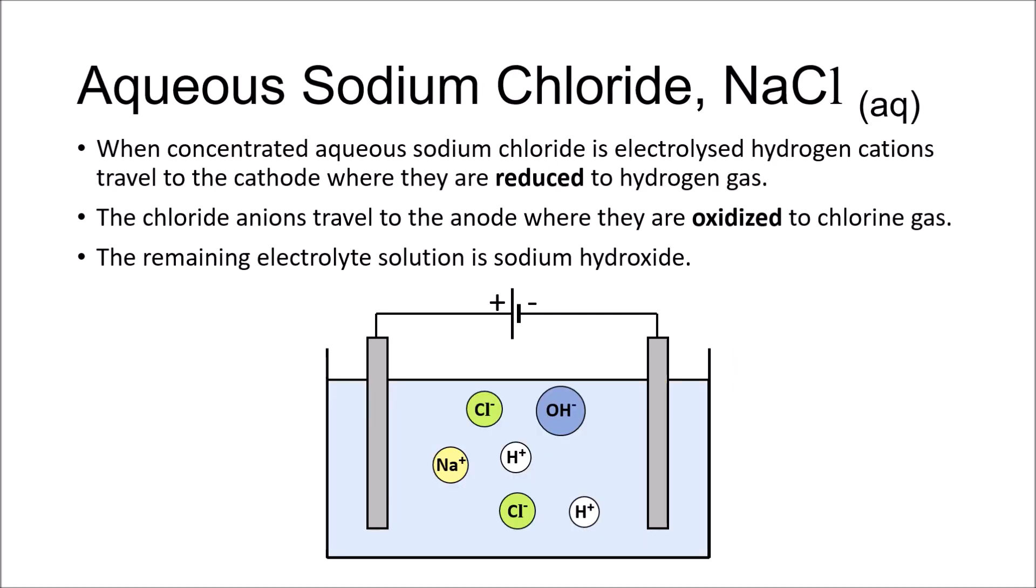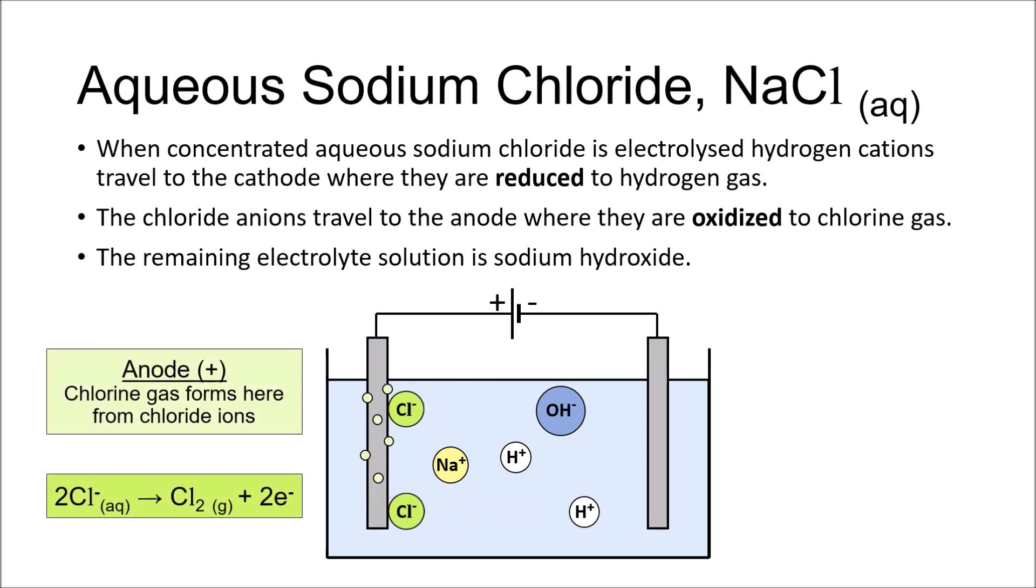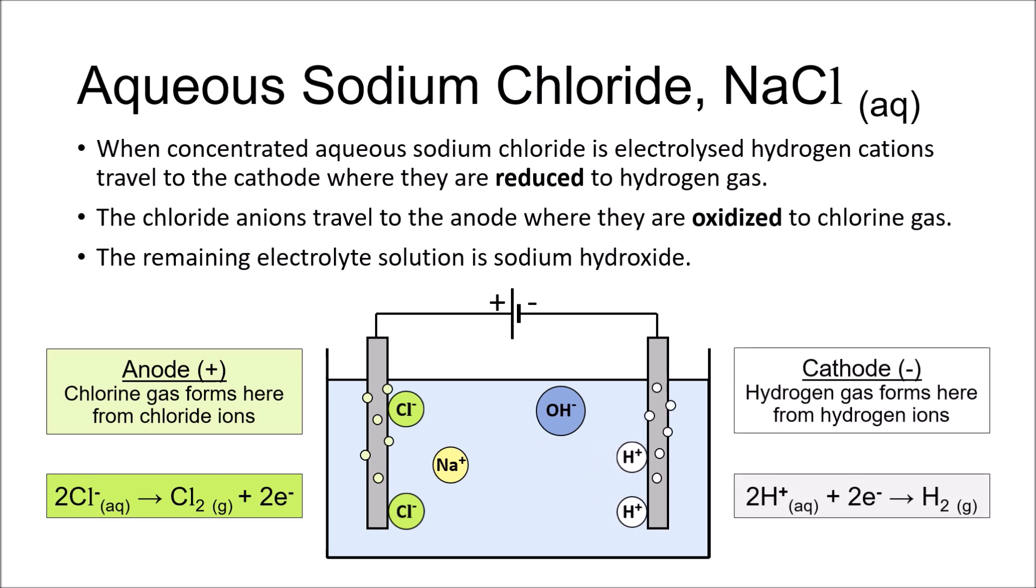A much better way to mass-produce chlorine is by electrolysis of concentrated sodium chloride solution, also known as brine. When electrolyzed, we obtain chlorine gas at the anode as before, and hydrogen gas at the cathode this time, as the hydrogen cations are reduced and discharged instead of the sodium ions. The sodium ions and hydroxide ions remain in the electrolyte solution to form sodium hydroxide.